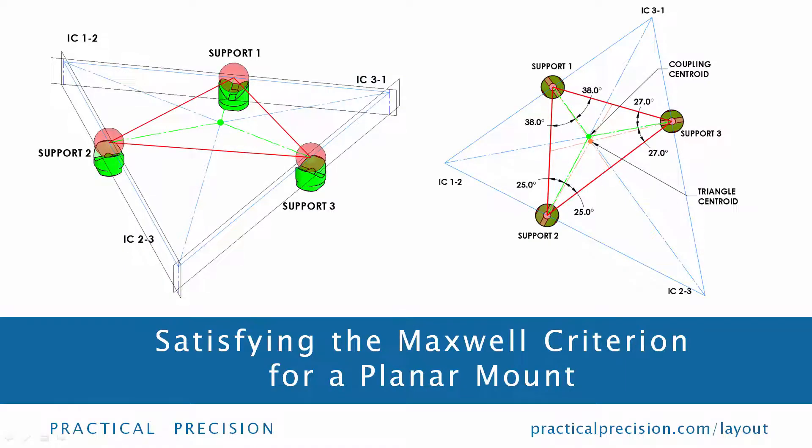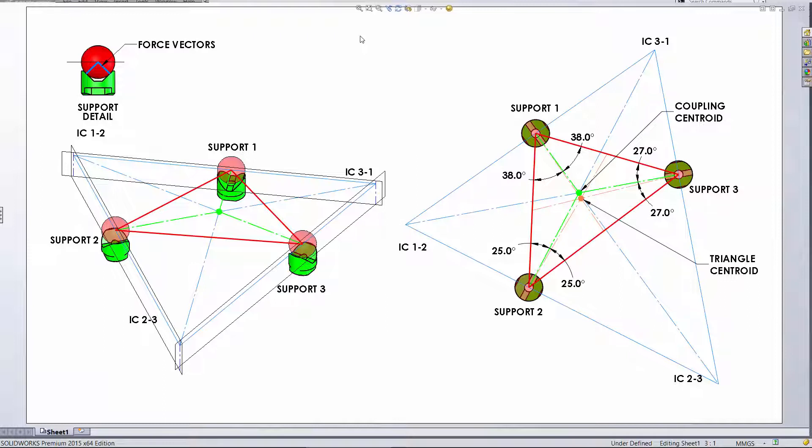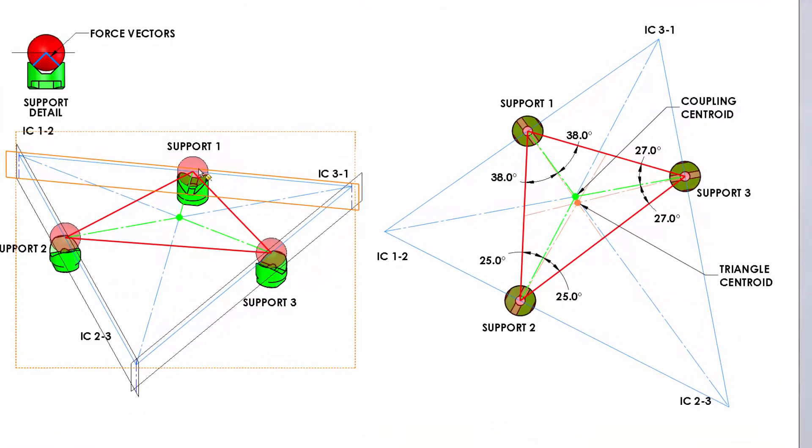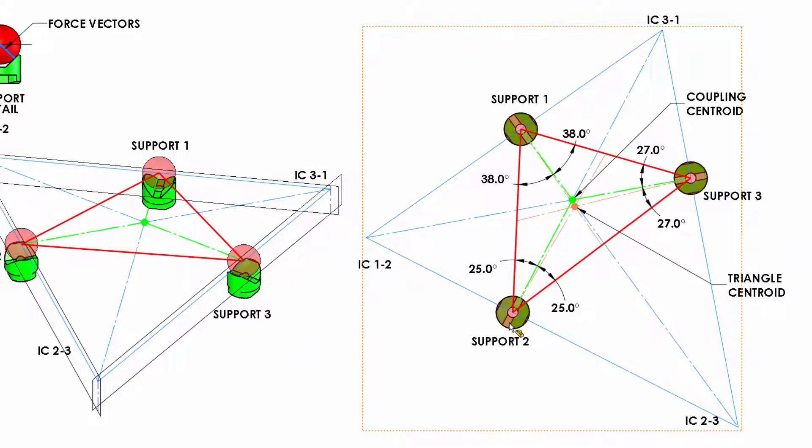Satisfying the Maxwell criterion is greatly simplified in the case of a plane arrangement of three balls and three Vs. Simple geometry can be used to optimize even an arbitrary layout of three supports like the one we have here. If we define a triangle with a corner at the center of each ball, then the center line of each V groove should bisect the corresponding angle.